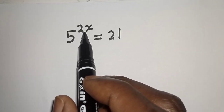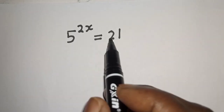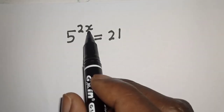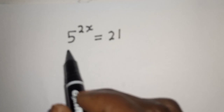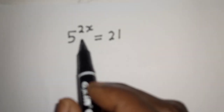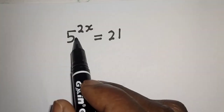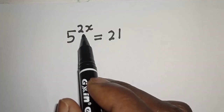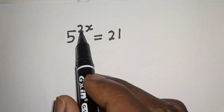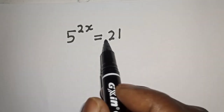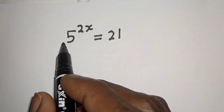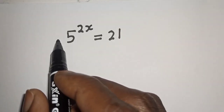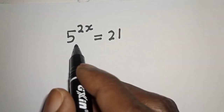5 raised to the power 2x is equal to 21. What is the value of x? Hi everyone, welcome to my class. In this class, we want to find the value of x from this equation: 5 raised to the power 2x is equal to 21. And we are going to solve this in 3 different ways.